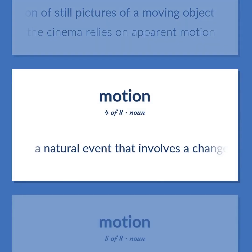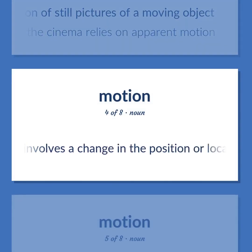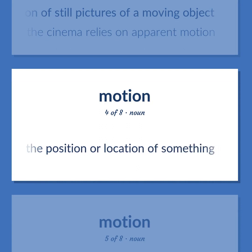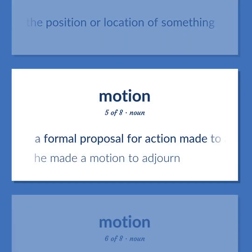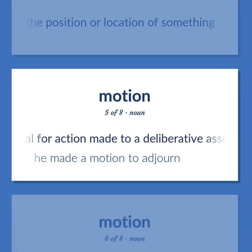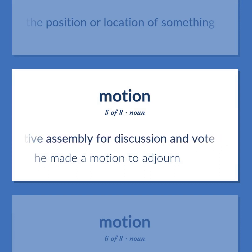Motion: A natural event that involves a change in the position or location of something. A formal proposal for action made to a deliberative assembly for discussion and vote — he made a motion to adjourn.